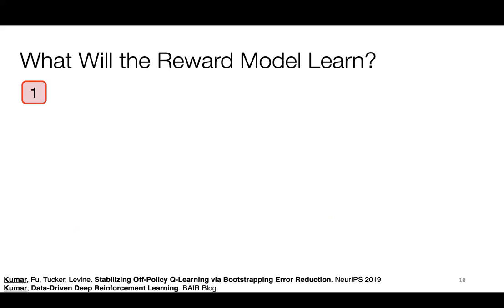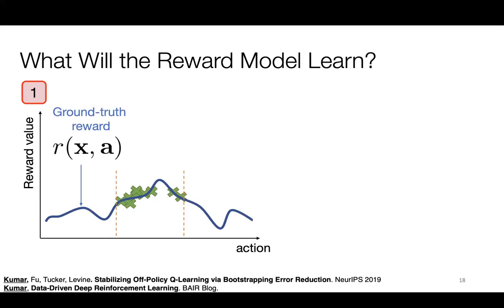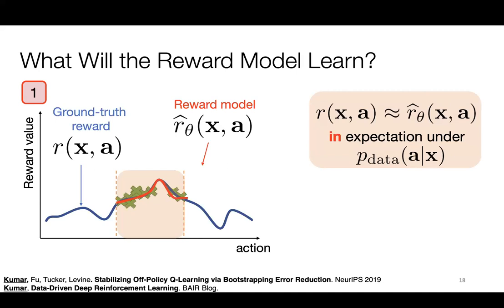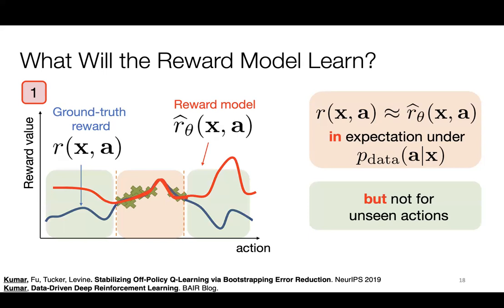Let's look at what happens in this recipe. In step one, when we train the reward function r_theta using supervised learning with sufficient model capacity and cross-validation, we can make the r_theta closely match the ground truth reward in expectation under the data distribution. So the red curve will closely align with the blue curve inside the region marked by the dashed lines. However, I have no control over how this reward model extrapolates — it is likely to be incorrect for unseen actions, as an artifact of distributional shift.